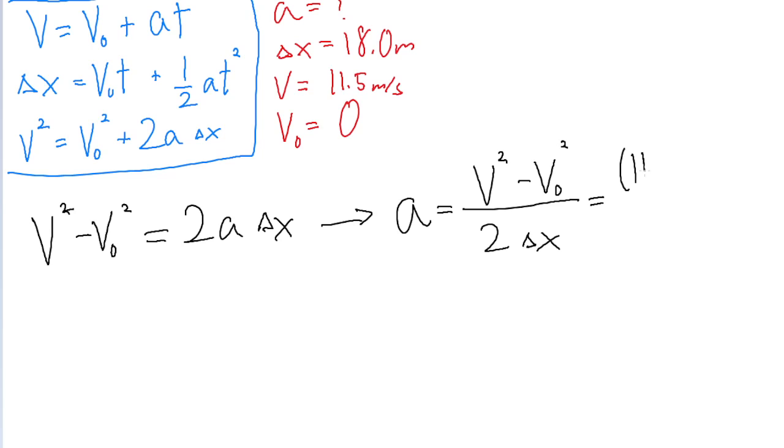So the square of the final speed, which is 11.5 meters per second, minus the square of the initial speed, which is just zero, divided by 2 times the distance, which is 18 meters. So 2 times 18.